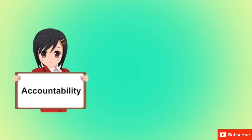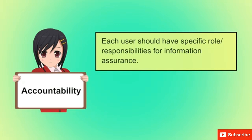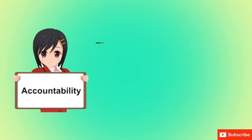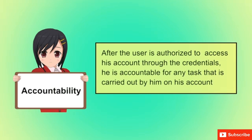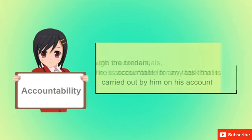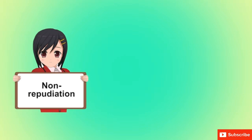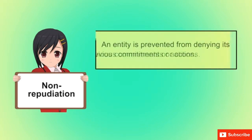Accountability focuses on ensuring that any actions taken by an entity can be traced uniquely to that entity. For example, after the user is authorized to access his account through credentials, he is accountable for any task carried out on his account. Non-repudiation is the assurance that someone cannot deny something. A legal document typically requires witnesses to signing, so that the person who signs cannot deny having done so.